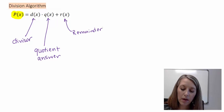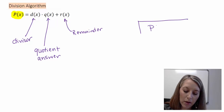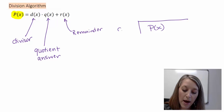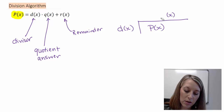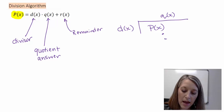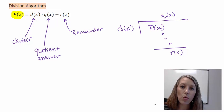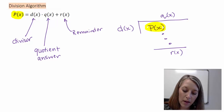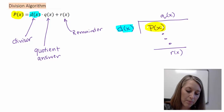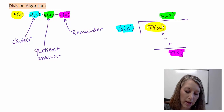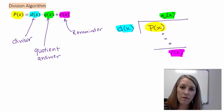My original polynomial P of X goes here; what I divide it by, my divisor D of X, goes there; my answer or quotient Q of X goes here; and after we do the math, my remainder goes here. So if we ever want to check the process, the way we write this out is: the original polynomial P of X equals my divisor times my quotient, plus our remainder. That's what we use the division algorithm for.